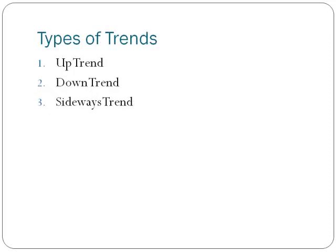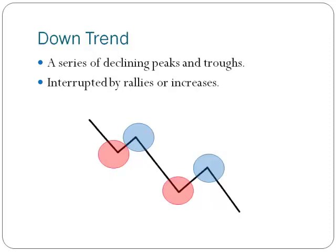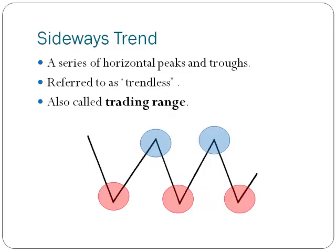The uptrend, the downtrend, and the sideways trend. The uptrend is a series of successively higher peaks and troughs, and is interrupted by sell-offs or declines. A downtrend is a series of declining peaks and troughs, which is interrupted by rallies or increases. The sideways trend is a series of horizontal peaks and troughs, and the market is often referred to as trendless or also known as trending range.